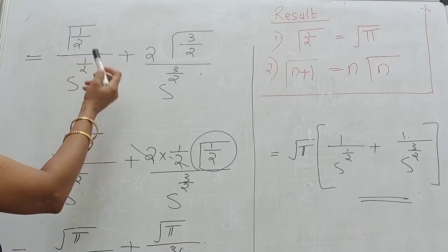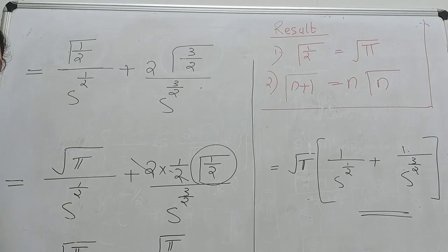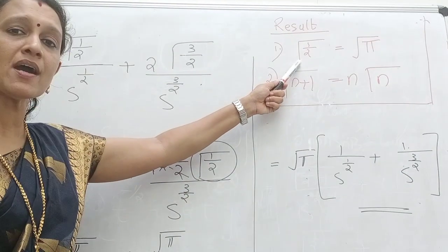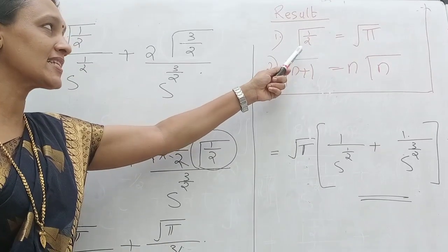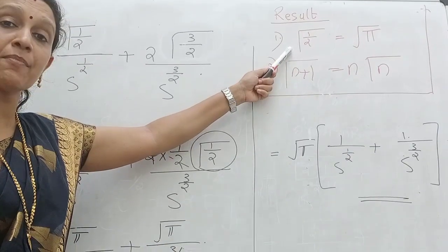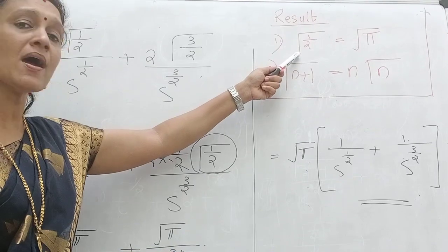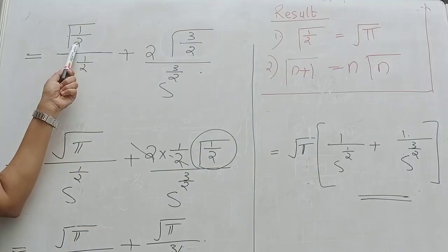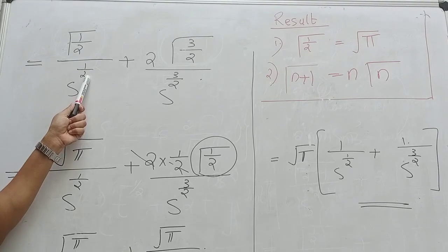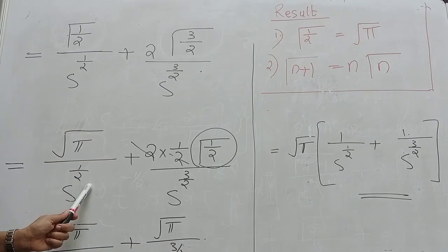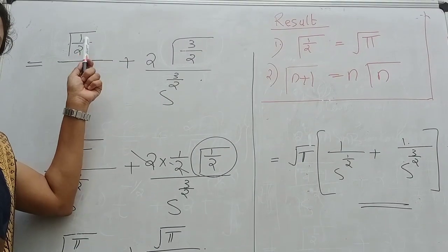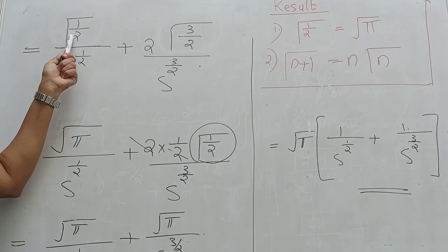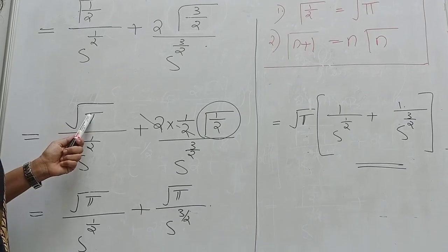To further simplify, learn two important results in the gamma function. The first result says that gamma 1 by 2 equals root pi — this comes from the section on gamma function. So whenever we have gamma 1 by 2, we can replace it with root pi. Applying this, the first term gamma 1 by 2 by S raised to half becomes root pi divided by S raised to half.